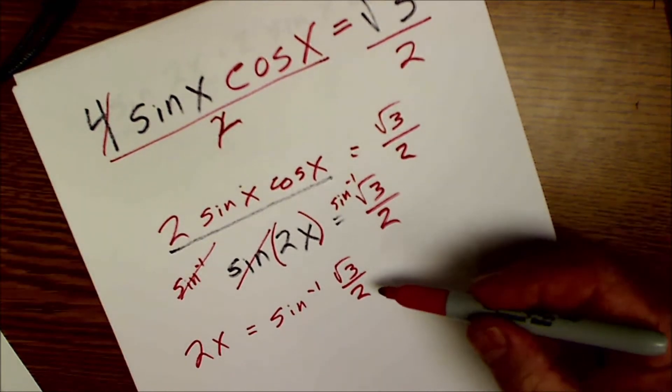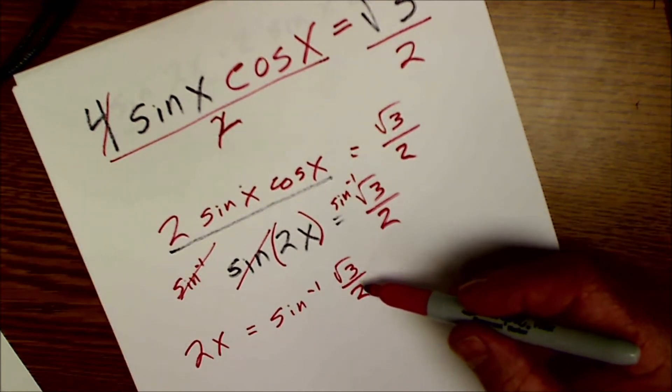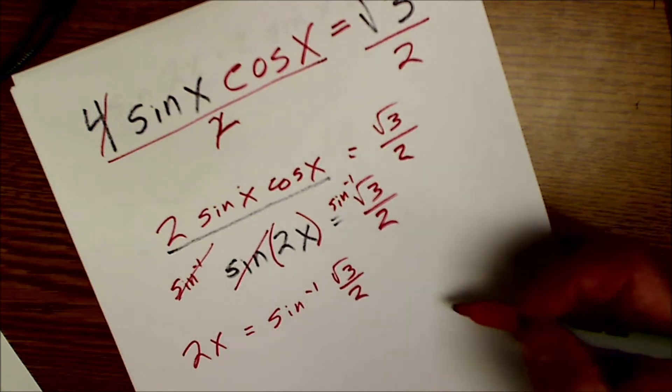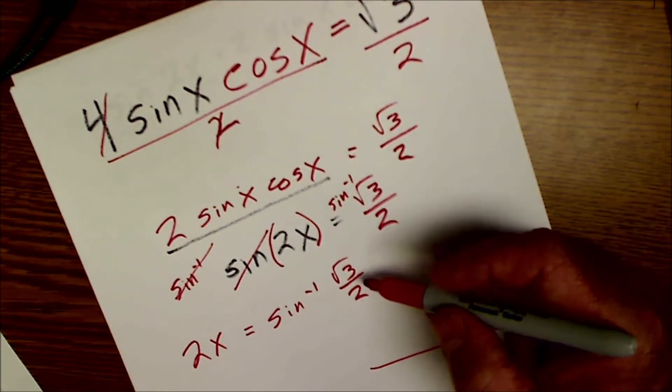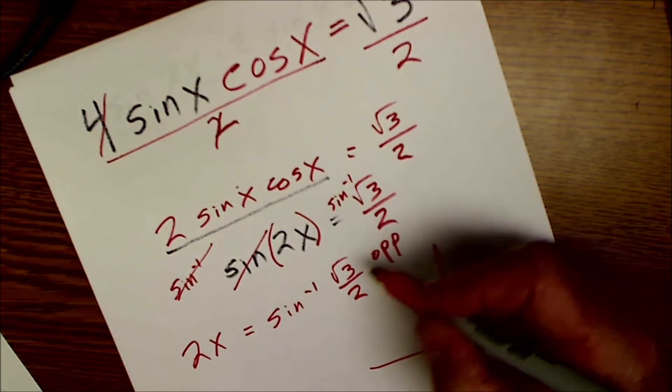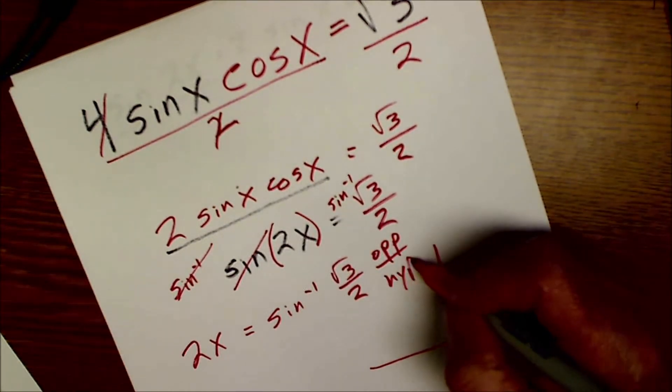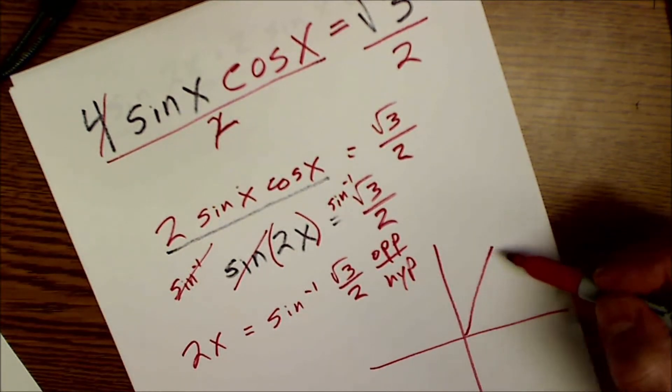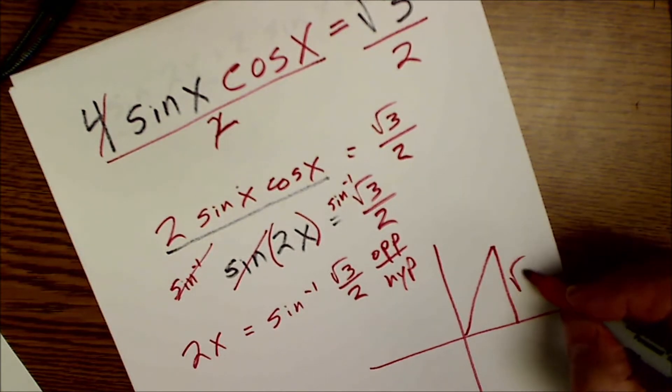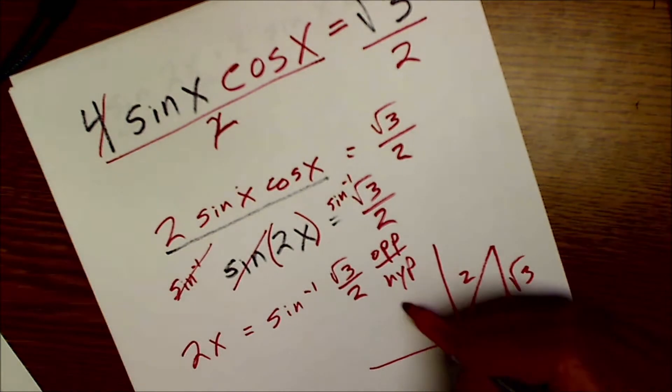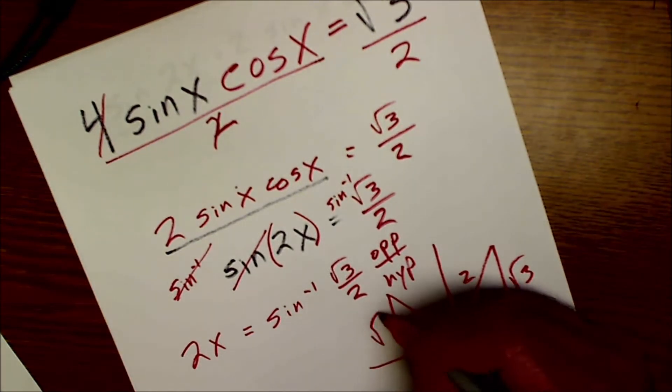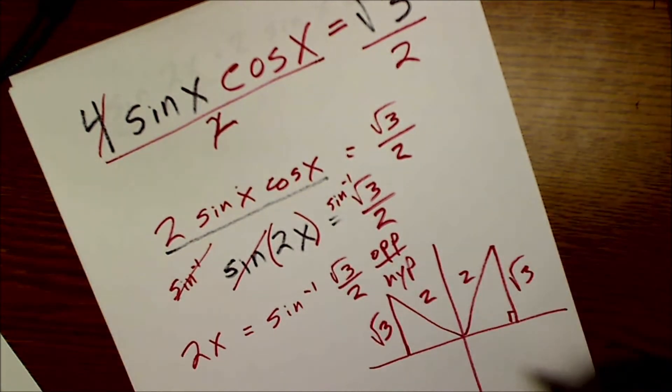Remembering this is a dependent variable. I'm looking for an independent variable. There'll be an infinite series of solutions. It's a positive ratio of sides where the opposite is root 3 and the hypotenuse is 2. So that's going to happen in the first quadrant or in the second quadrant where the opposite is root 3, the hypotenuse is 2, and the adjacent is negative 1.